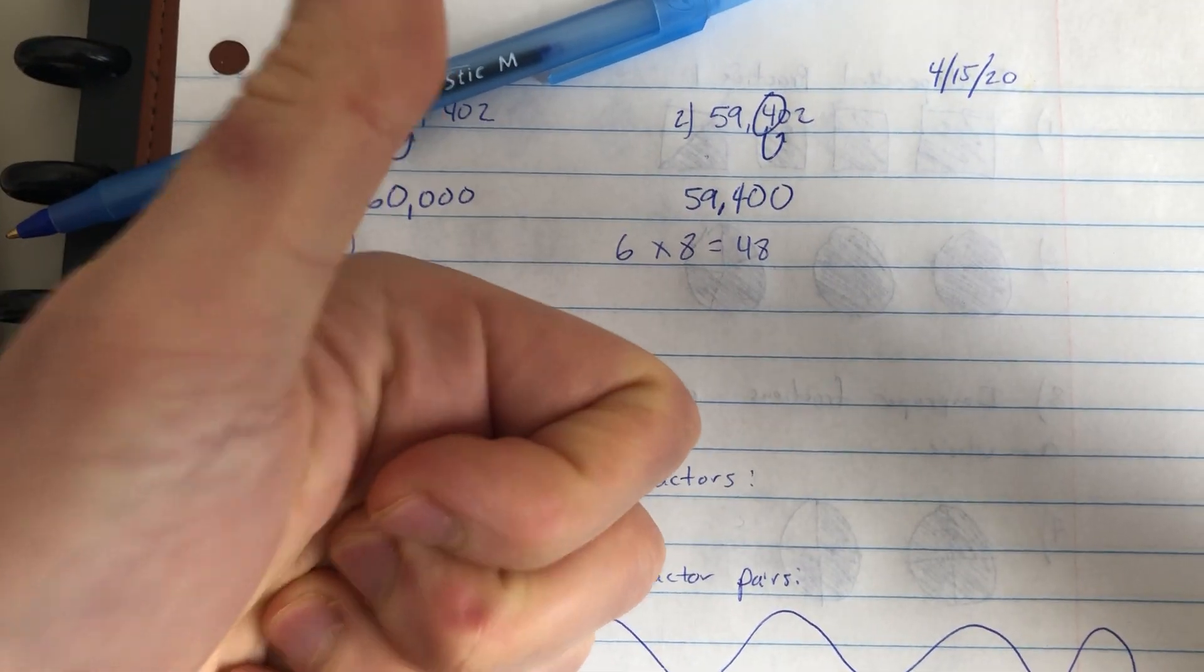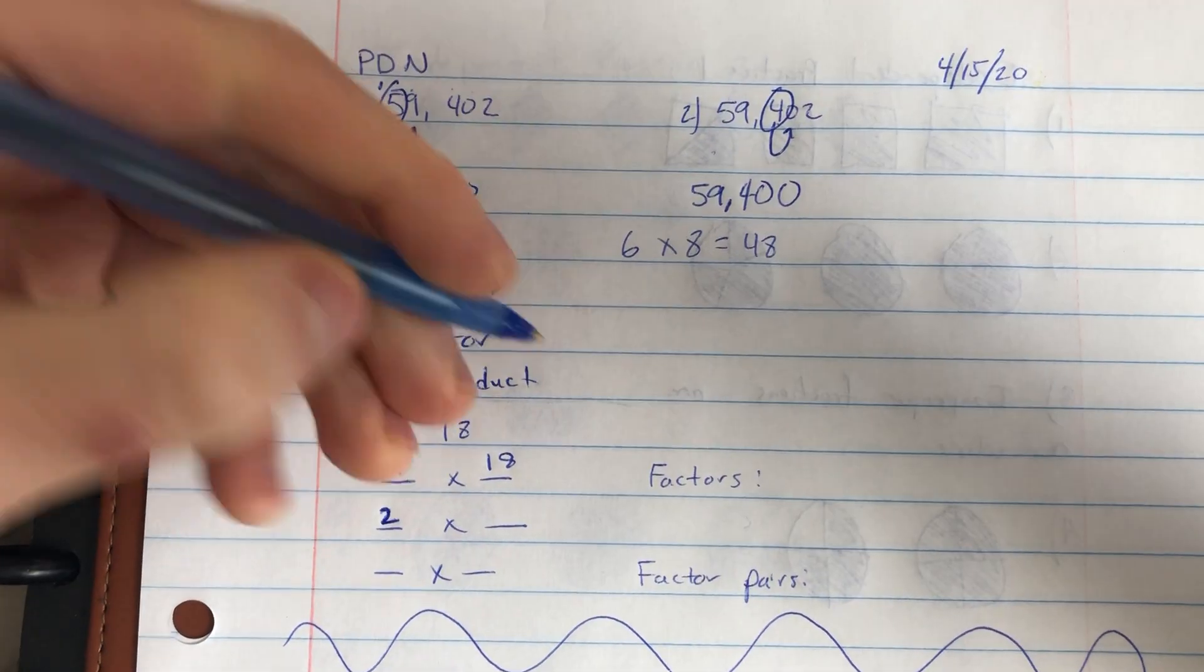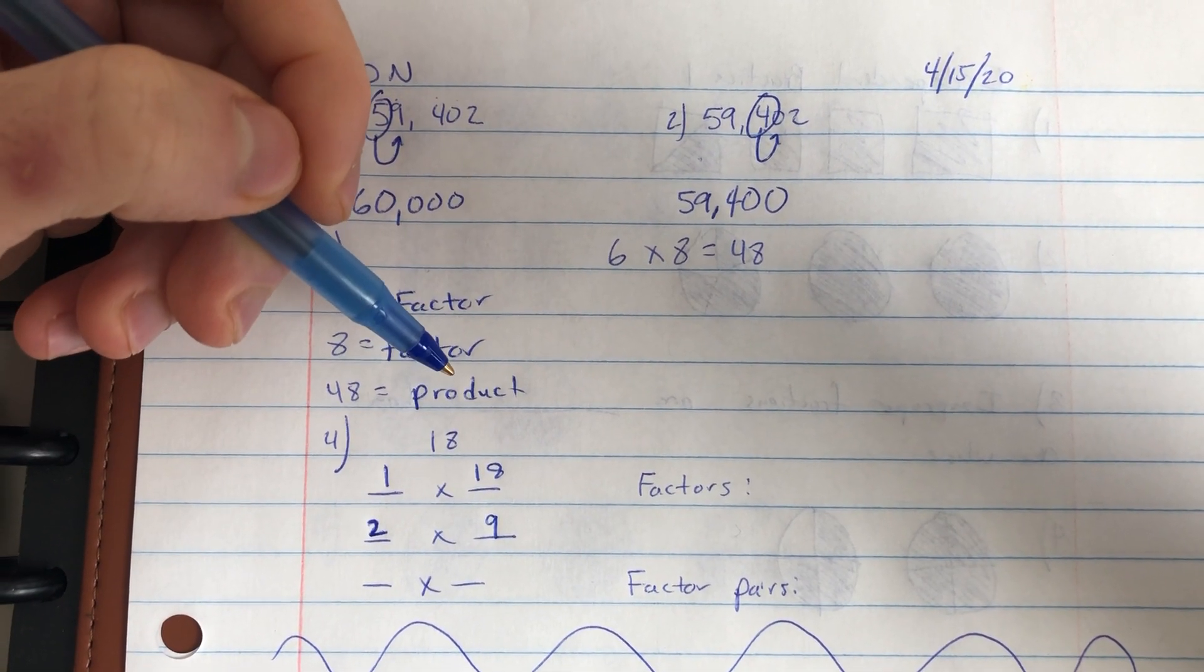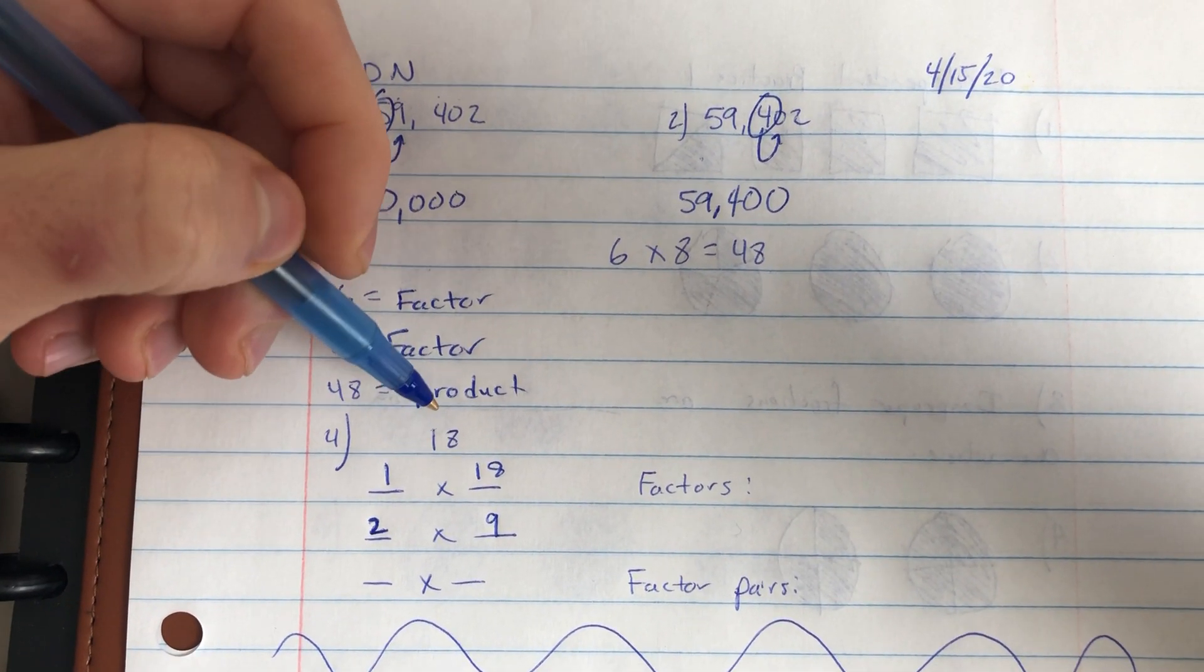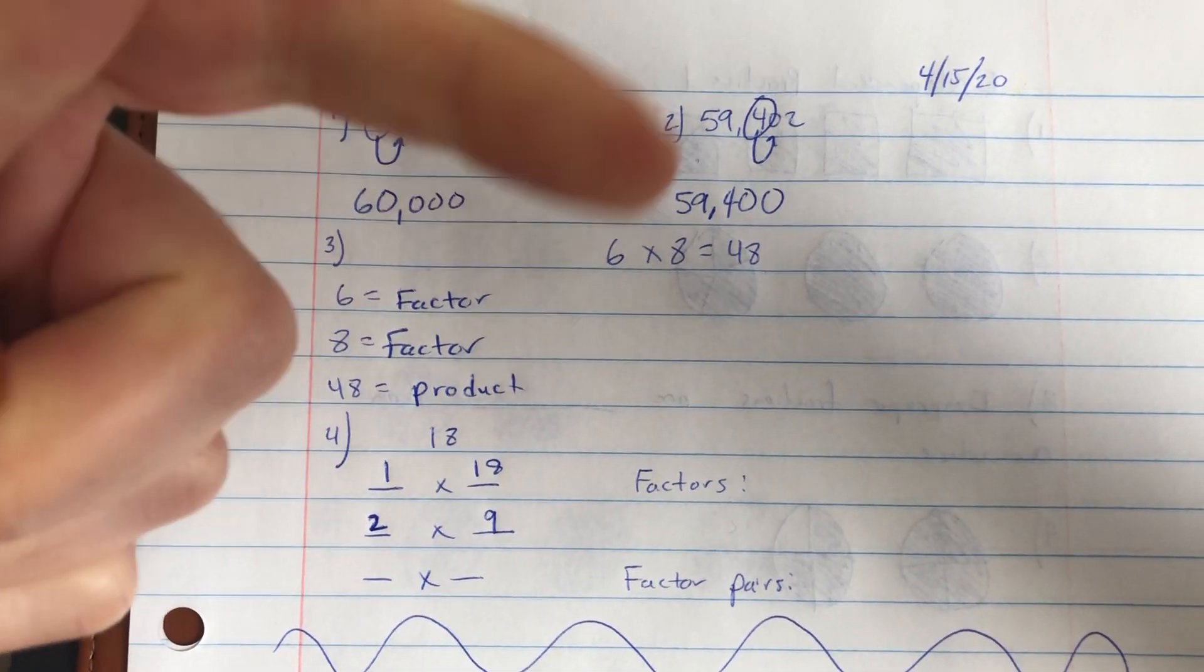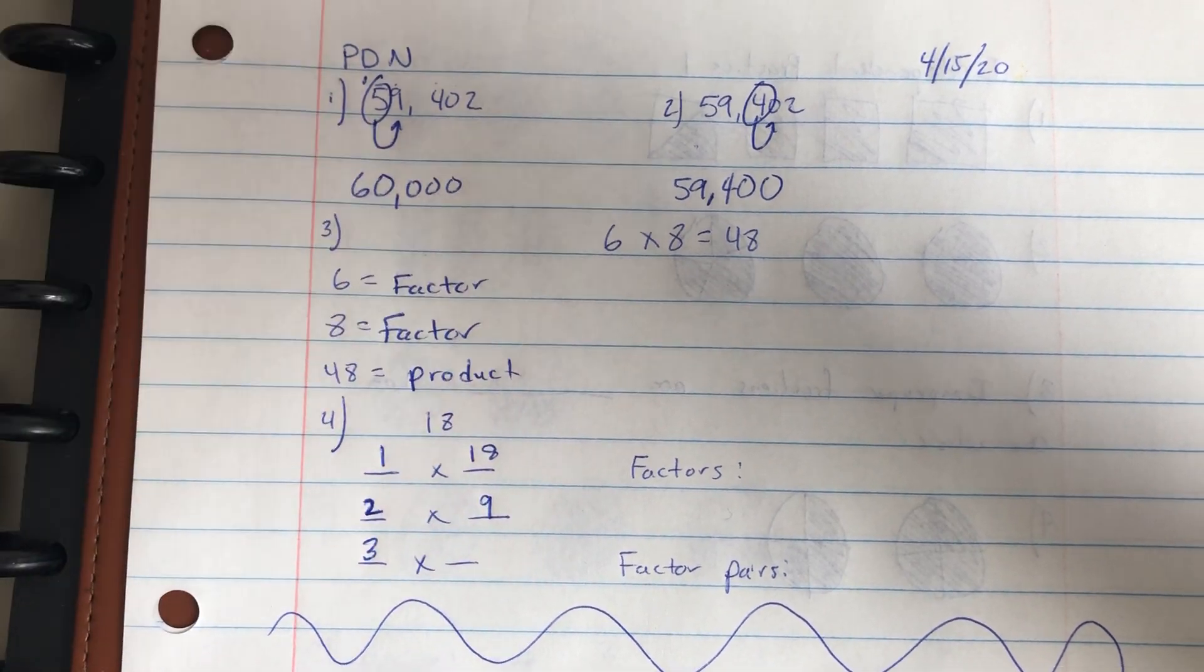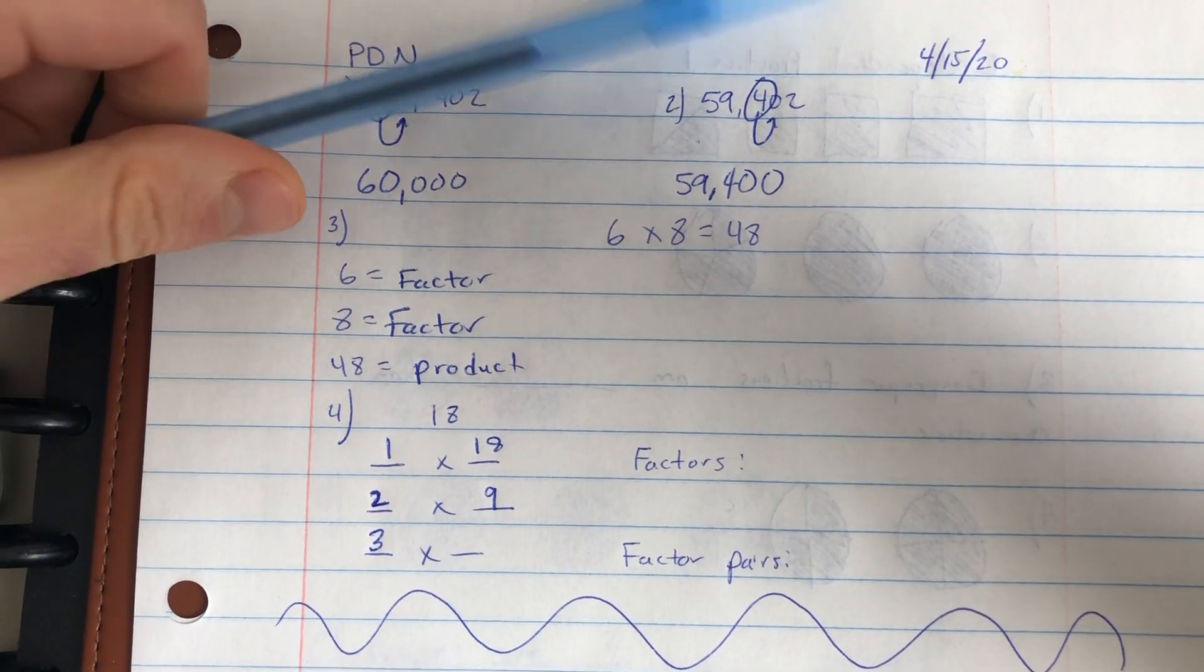2 times 9 equals 18. I also know that 18 is divisible by 3 because 1 plus 8 equals 9, and I can roll my 3s, 3, 6, 9, and land directly on 9. So that means I could roll my 3s and eventually land directly on 18 as well.